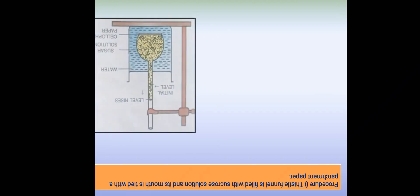This is the thistle funnel. You have the beaker over here and you have a semi-permeable membrane. The thistle funnel is fitted with sucrose solution and its mouth is tied with parchment paper or cellophane paper.